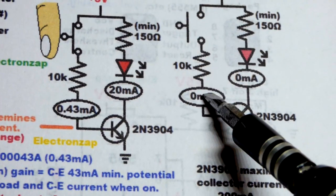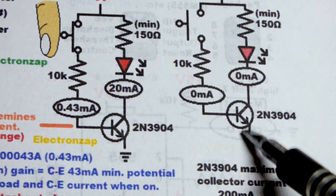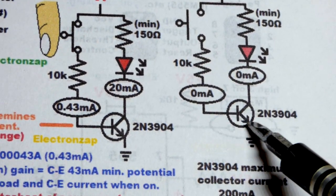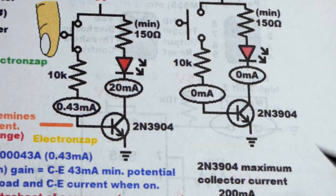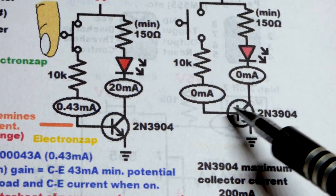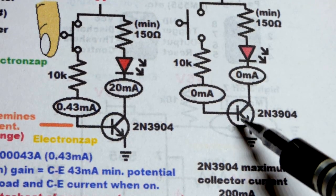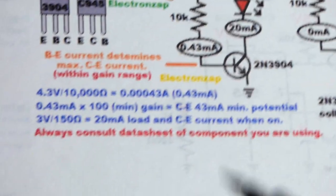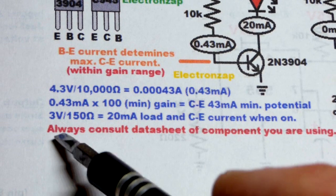And then when there's no base to emitter current, then the transistor is not conducting, you call that cut off. And if the transistor is limiting current, it's not conducting fully, or it's not cut off, it's conducting but not fully, then that's called the active region, which we're not going to look at in this video.